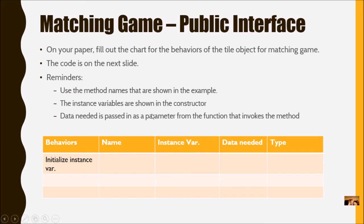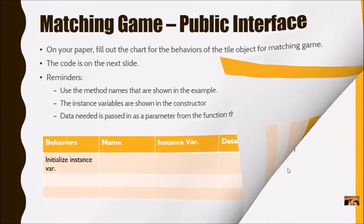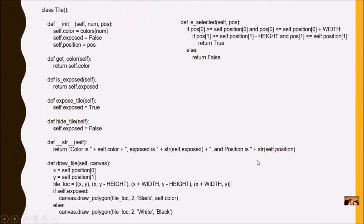So if you see a parameter in a method, something other than self, that's going to be your data needed. Also determine what type it is. Is it a constructor, a mutator, or an accessor? So work together in your group and fill out this chart. Here's the code. You can stop the video now, fill out the chart, and then turn back on the video for more instructions.